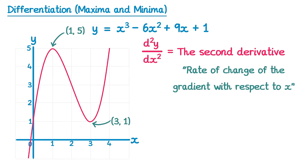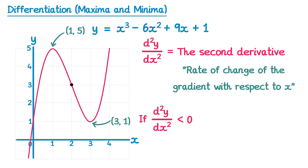How can this tell us if it's a maximum or minimum? Starting from the bottom left and moving right: the gradient is initially a large positive value, then starts to decrease, getting smaller and smaller until it reaches zero at the top. As we move past this maximum point, the gradient turns negative and becomes more and more negative. So the gradient is decreasing throughout — it starts positive, becomes zero, then turns negative. This means at a maximum point, d²y by dx² is less than zero.